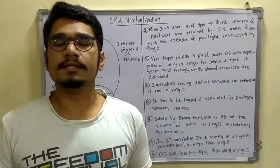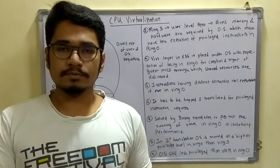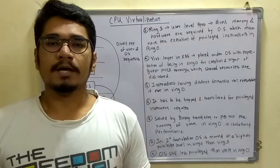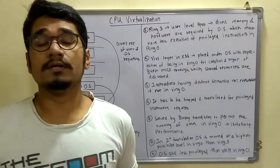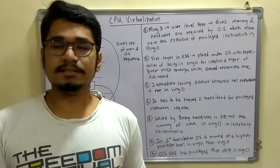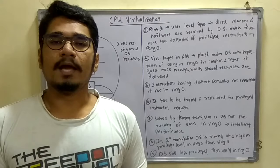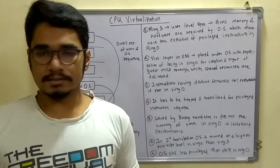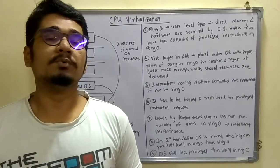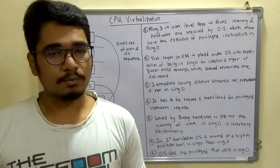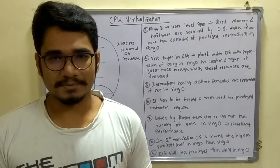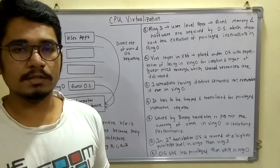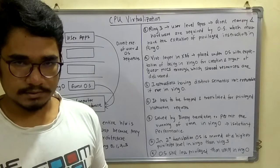In my last two videos I discussed the further categories of virtualization — memory virtualization, and disk and IO virtualization. Today we'll be seeing what CPU virtualization is: how virtualization is done on the central processing unit inside the hardware, and what components or processes are followed. This is Ranjiraj and you're streaming on the Steady Beast.